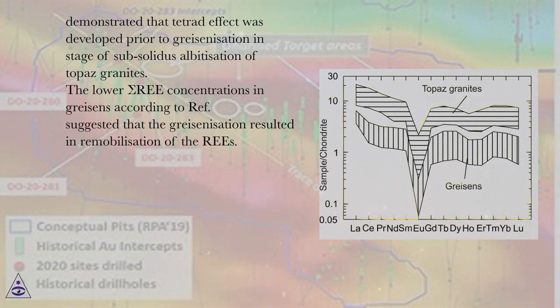The lower sigma REE concentrations in greisens according to Ref. suggested that the greisenization resulted in remobilization of the REEs.